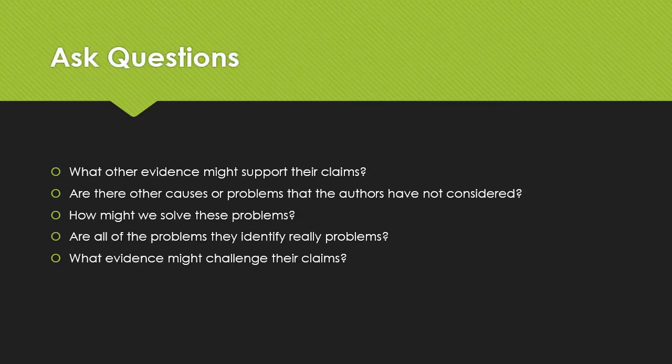This is also the stage at which you want to ask questions about the article. Any article you find will be limited — it can't tell you everything. So ask yourself: what other evidence might support their claims? What have I seen or read elsewhere that I could bring to this article? Are there other causes or problems related to their subject that they haven't talked about? Are there other ways to solve the problems they bring up? And what other evidence might challenge their claims? These questions will help you put the article in context with other things you've read, explain what it does and how it functions in your own writing, and guide you toward new sources.